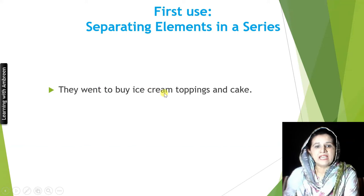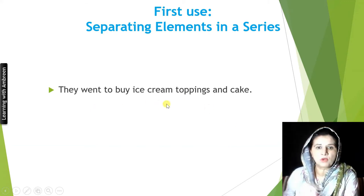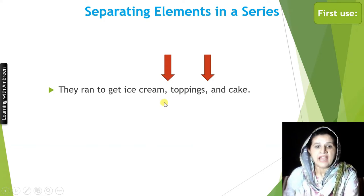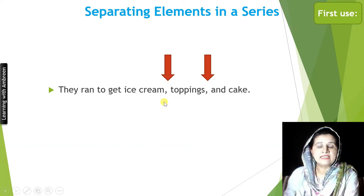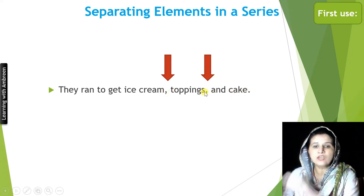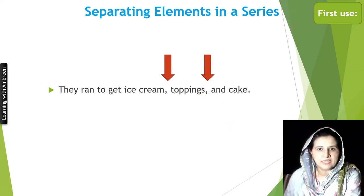For example: 'They want to buy ice cream, toppings and cake.' Without commas there is a problem in this list. We fix the problem by adding commas, and now all the items are separated and quite easily understandable. There is no confusion at all.